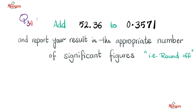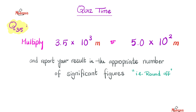Another question: can you add 52.36 to 0.3571 and report your result in the appropriate number of significant figures? Yet another question: multiply this number in meters times this number also in meters and report your result in the appropriate number of significant figures. Let me know the answers to questions 34 and 35 in the comments. You will find the answer key in the next video when we talk about dimensional analysis.